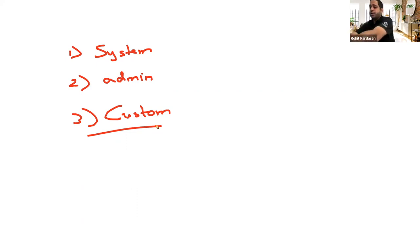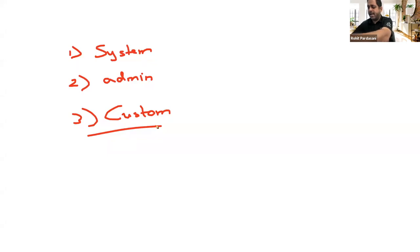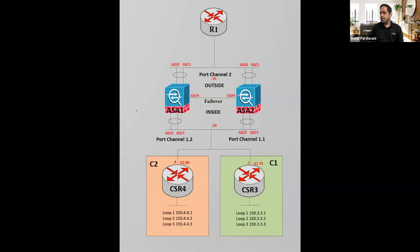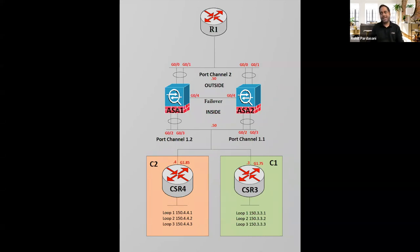Now we'll start building the virtual firewall step by step, explaining each command and the restrictions to keep in mind. Looking at the diagram, I have two ASAs. At this point I'll only touch ASA1 — we will not touch ASA2 until we do failover.